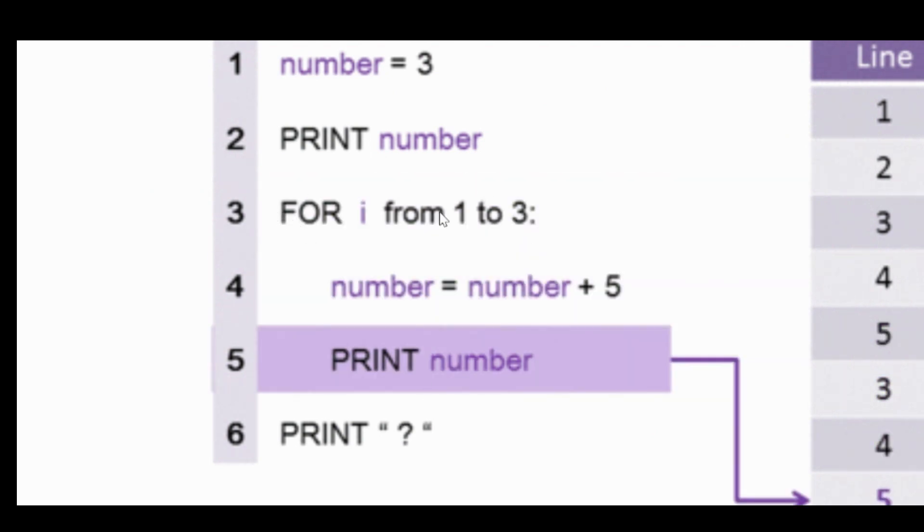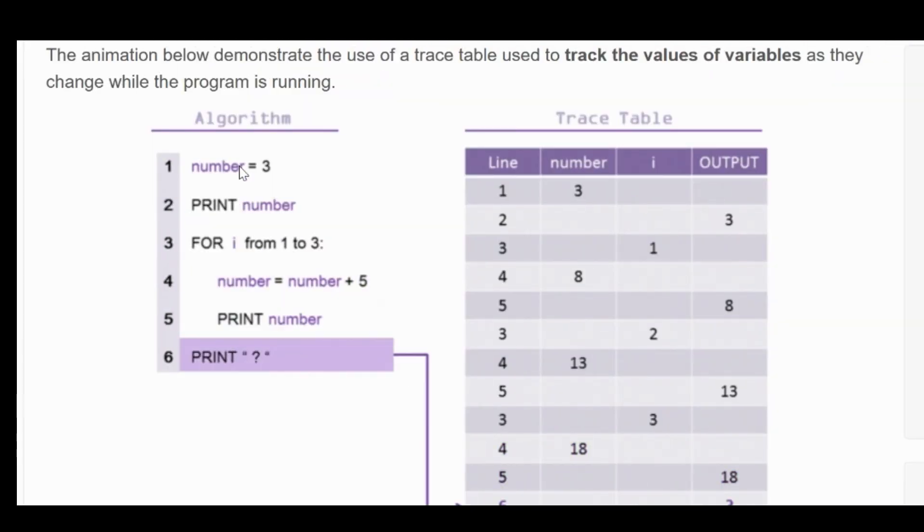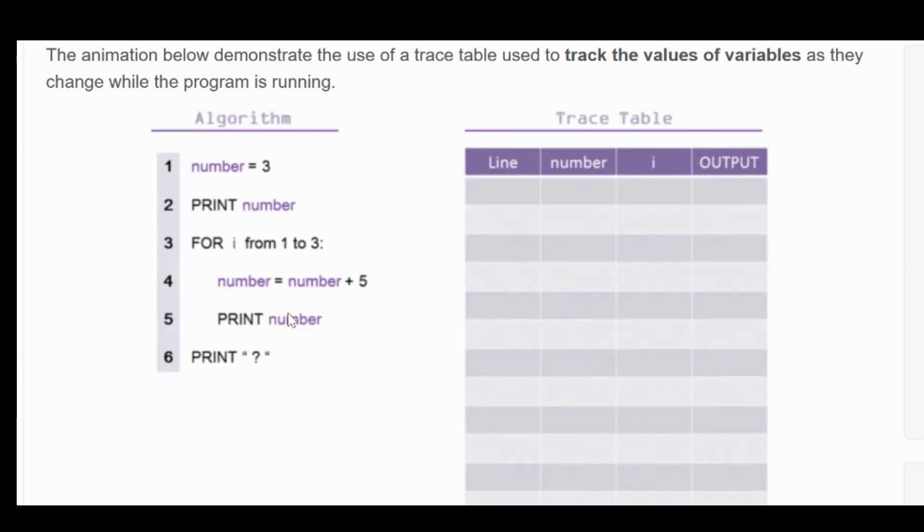You then repeat this loop three times and then you print question mark at the end. So obviously the initial number then changes its value as it goes down the program. So you can see in line one you've got number three, in line two it's still three.